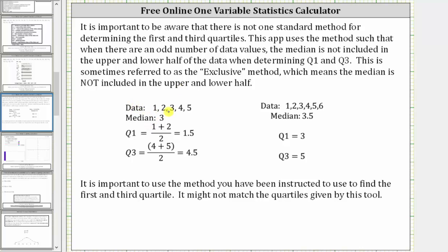Here we have a set of data with an odd number of data values. And notice the median is three. And then to determine quartile one, which is the median of the lower half, notice that three is not included in the lower half. And therefore, quartile one is the mean of one and two, which is equal to 1.5.